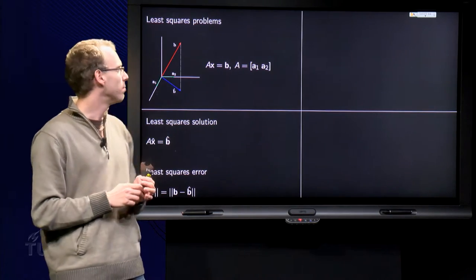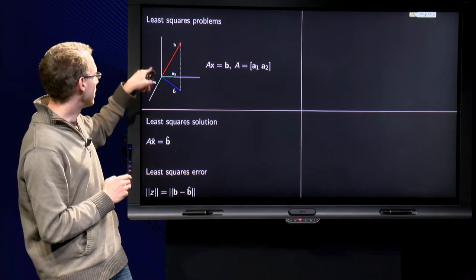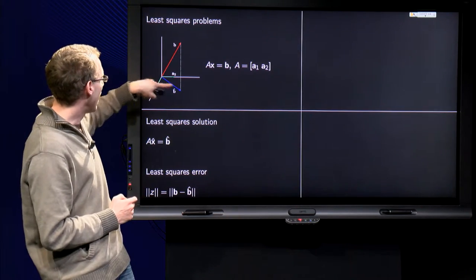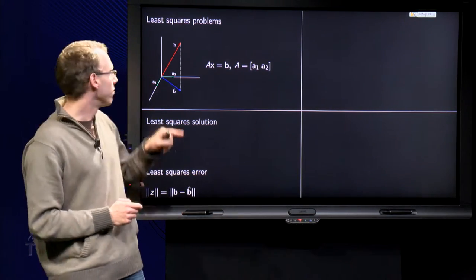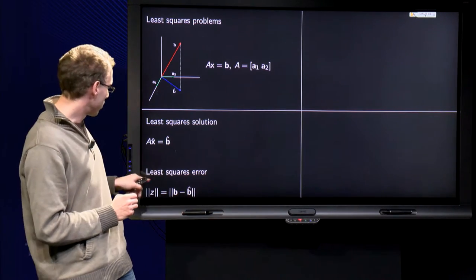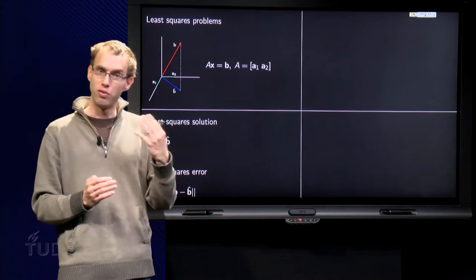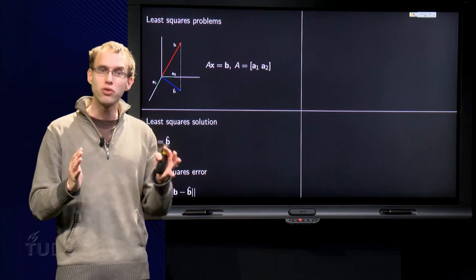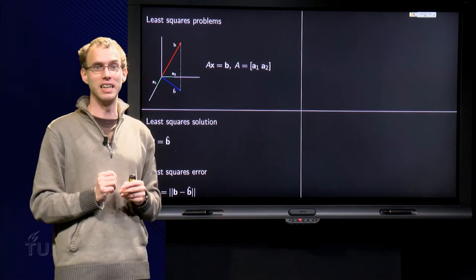So what are we actually minimizing? By choosing b̂ instead of b, we are minimizing the distance between any vector in the plane and b. We are minimizing the vector which we call z, which is b minus b̂. That is what we are actually minimizing here.